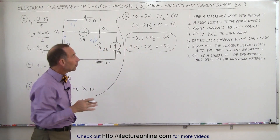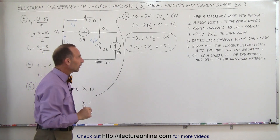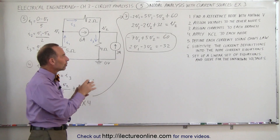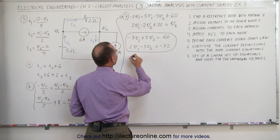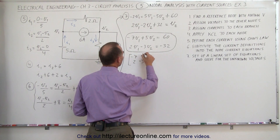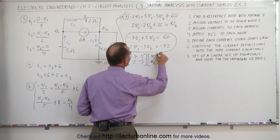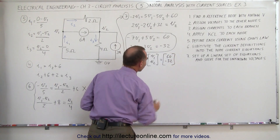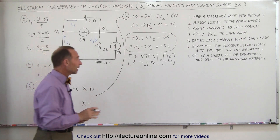Notice that from three unknown currents, we've reduced that to two unknown voltages, and we can easily solve those equations in a number of ways. Let's use Cramer's rules and determinants. We write this as a matrix: minus seven, five, two, and minus three, multiplied by the V1, V2 matrix, equaling the constants sixty and minus thirty-two.